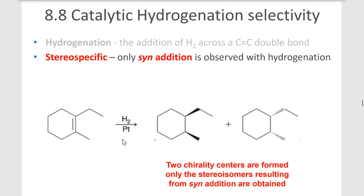We don't have regiochemistry here because we're adding hydrogen and hydrogen across a double bond—it doesn't matter which hydrogen goes where because they're the same. But we only get syn addition, meaning they both add to the same side of the double bond. They'll either add both coming out or both going back if the double bond is in the plane of the paper.